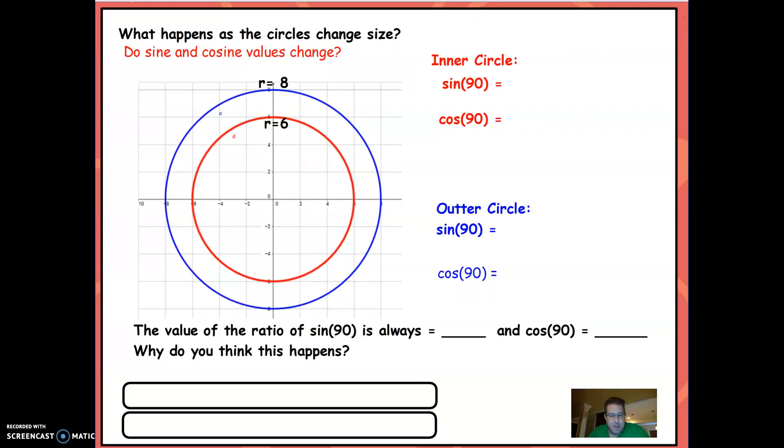All this is to get you to understand that all circles are going to be the exact same. Since all circles are similar, it's going to apply to all circles. The inner circle is going to be 6 over 6 or 8 over 8. If we're talking about y over r, that would be sine. Whether it's 6 over 6 or 8 over 8, it's going to be both 1. So it doesn't matter how big the circle is, it's always the exact same.